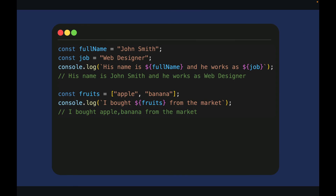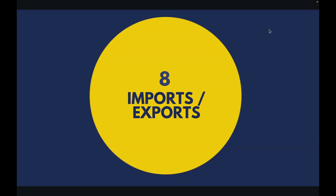Template literals. Remember how we used to combine strings with variables in JavaScript using the plus sign — the concatenation syntax? With template literals we use backticks, where we can combine strings with variables using the dollar sign and curly brackets. I can also use arrays and objects inside template literal syntax in combination with strings to produce a combined string and variables output.